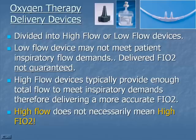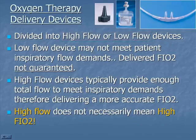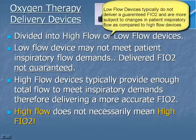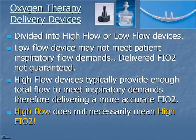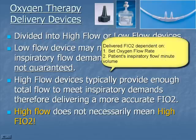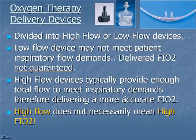That brings us to oxygen therapy delivery devices. We divide them into either high flow or low flow devices. Low flow devices may not meet the patient's inspiratory flow demands — the delivered FiO2 typically may not be guaranteed because it depends on both the flow through the device and the patient's inspiratory flow. A high flow device provides enough flow to meet the patient's inspiratory demands, therefore delivering a more accurate FiO2.